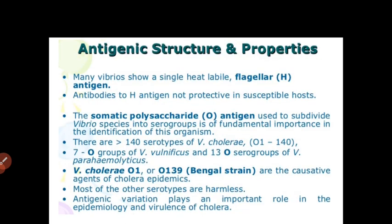Next, antigenic structure and properties. Many vibrios show a single heat-labile flagellar H antigen; antibodies to the H antigen are not protective in susceptible hosts. The somatic polysaccharide O antigen, used to subdivide Vibrio species into serogroups, is of fundamental importance in the identification of this organism.